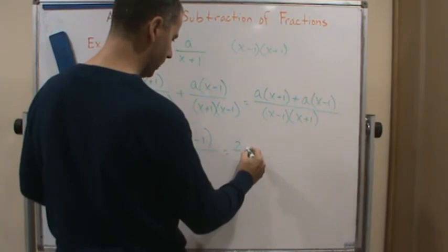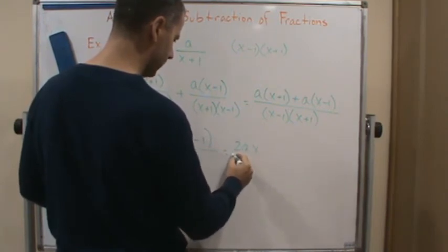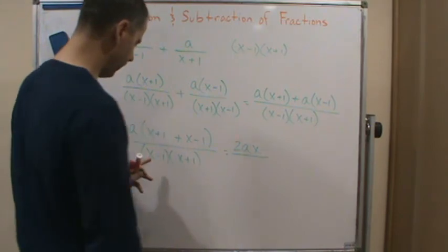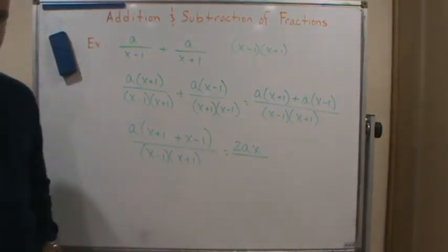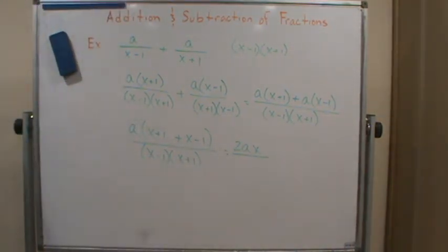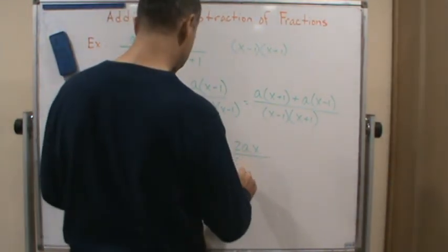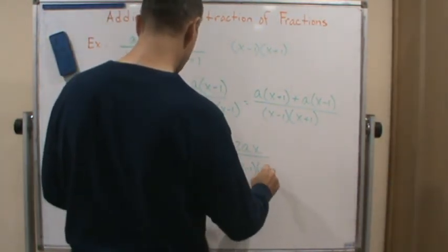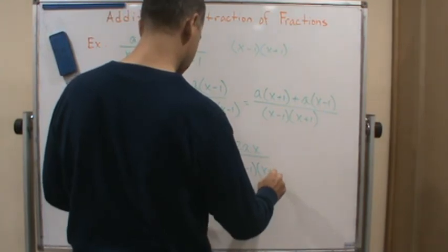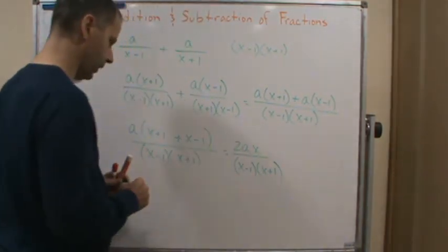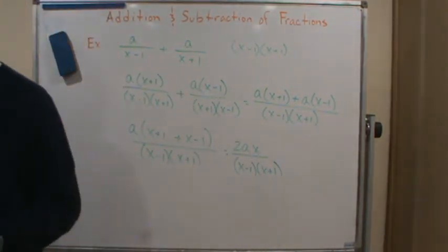So I get 2ax over, well this here is the form of a difference of two squares, right? But I'm going to leave it like this because we want to leave it in factored form. So it's going to be x minus 1 times x plus 1, so it's in completely factored form.